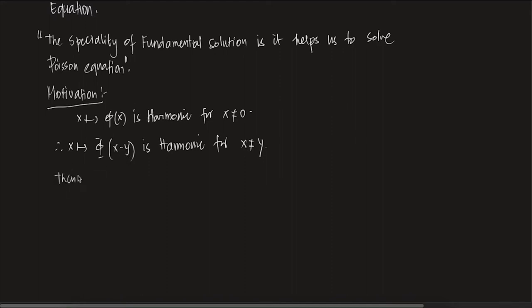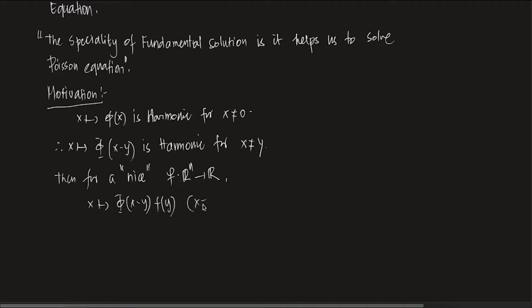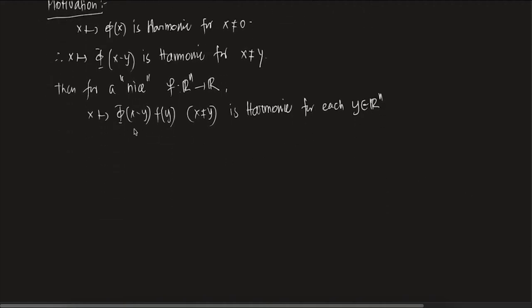So for a nice function F from ℝⁿ to ℝ, the map x → φ(x − y)·f(y) is harmonic for each fixed y in ℝⁿ. Why? Because when you fix y in ℝⁿ, f(y) is just a constant. So you are essentially multiplying a harmonic function by a constant, which keeps it harmonic.